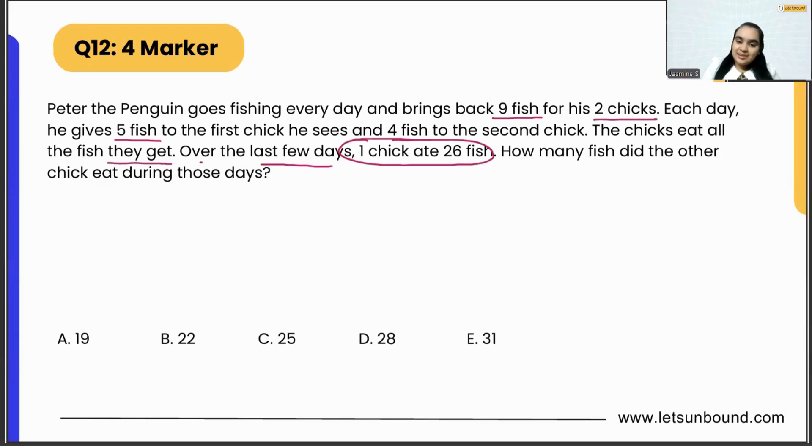So how many fish did the other chick eat during those days? We know that there are two chicks: Chick 1 and Chick 2. Let's say Chick 1 ate 26 fish in the last few days, but each day the chick can get either five fish to eat or four fish to eat.